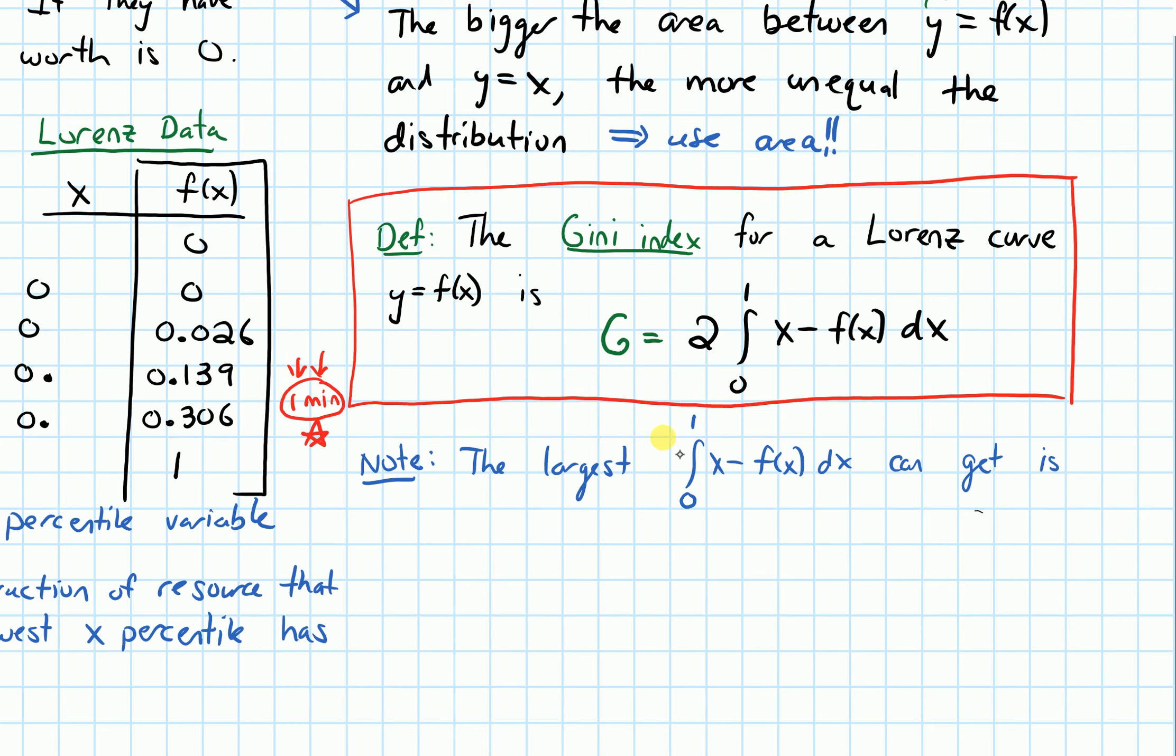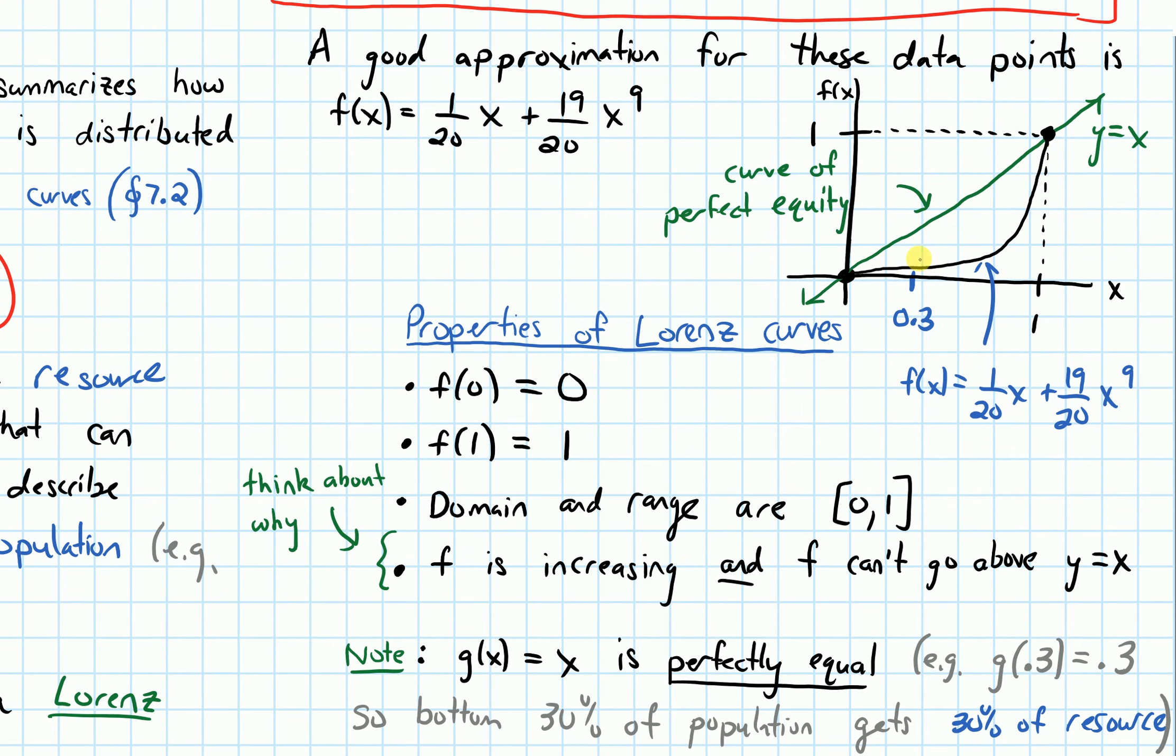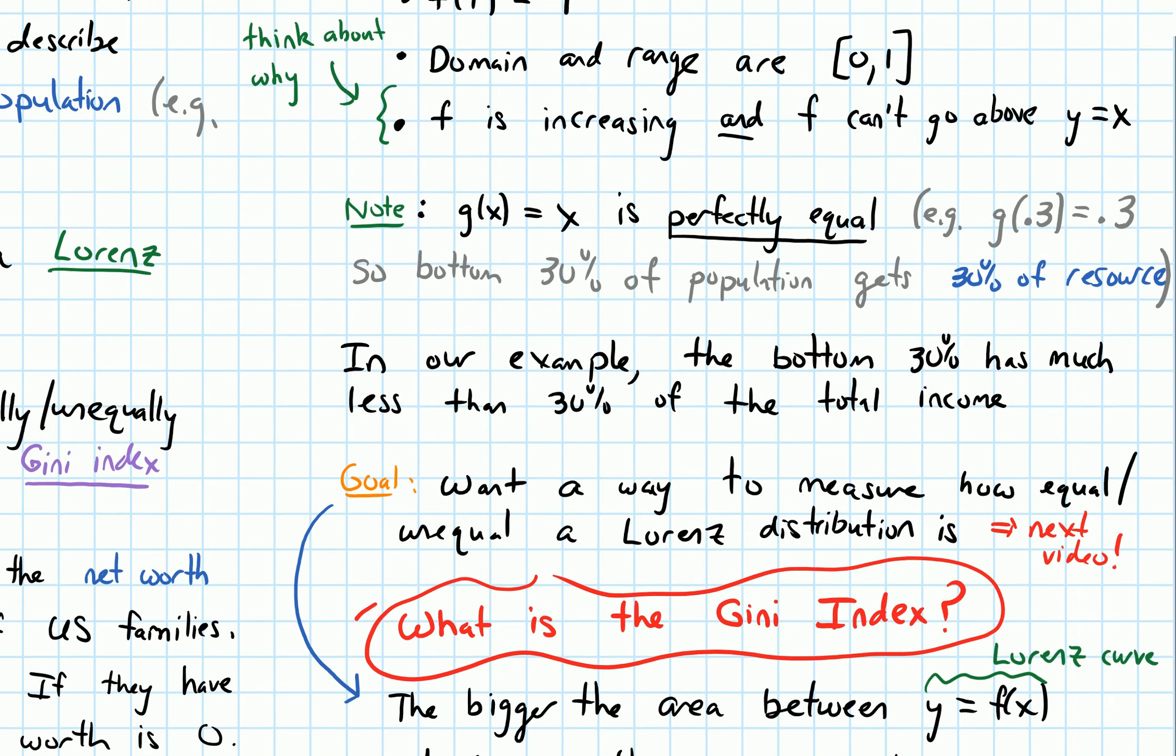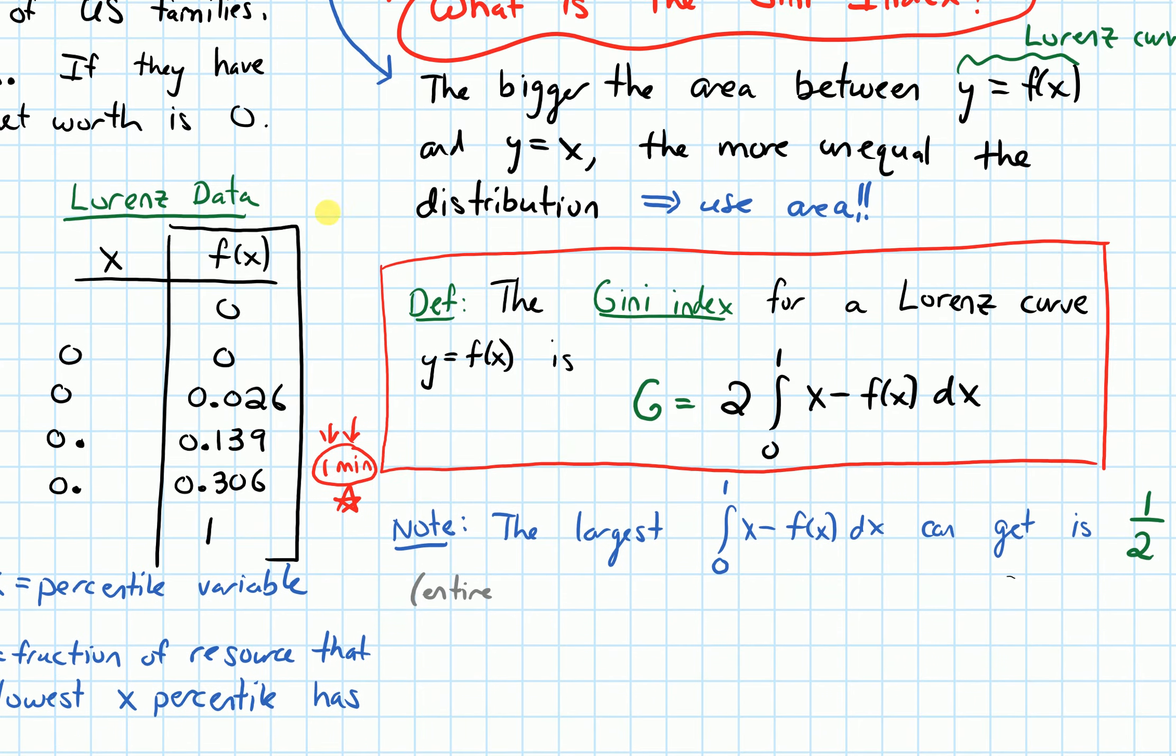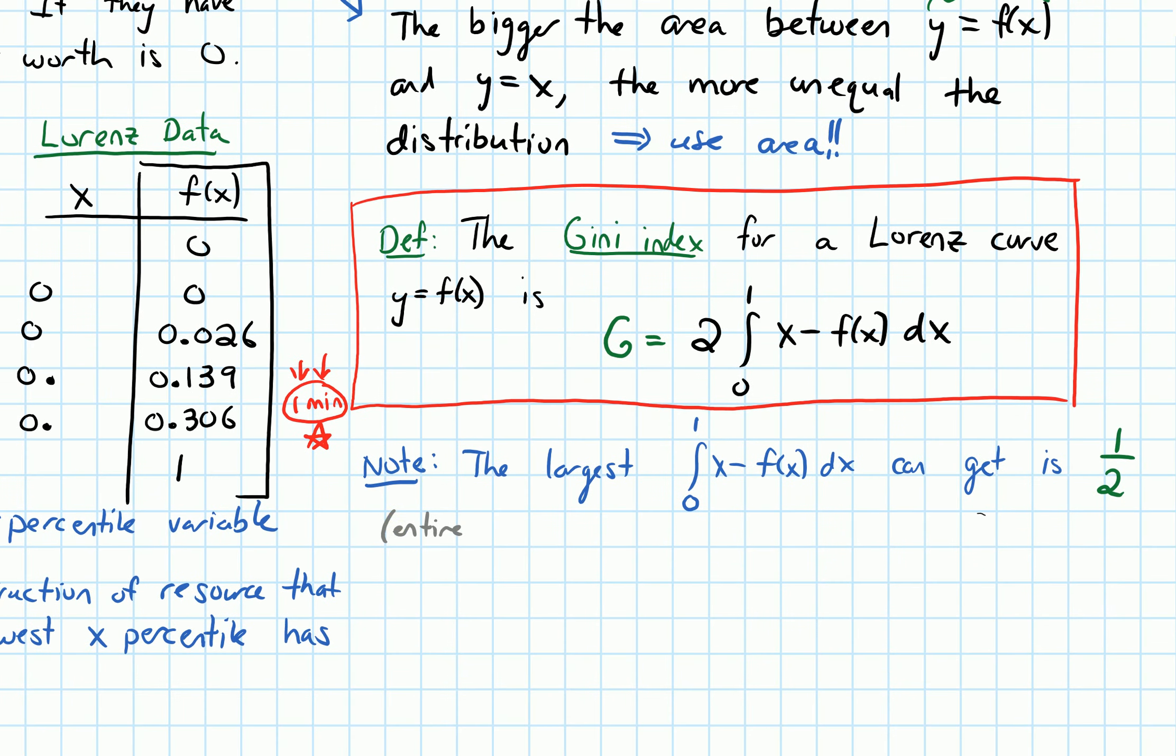Hopefully you did that. The biggest that the area could be is one-half, because the smallest f(x) could be is—what if f(x) was just flat on the x-axis the whole way? What if it was just sort of flat, and then maybe it has just like a massive jump and it's back up to one right when x equals one? In that case, we would be measuring the entire area under y equals x on the interval from zero to one, which is just the area of that triangle with a base of one and a height of one, and the area of that triangle would be a half.